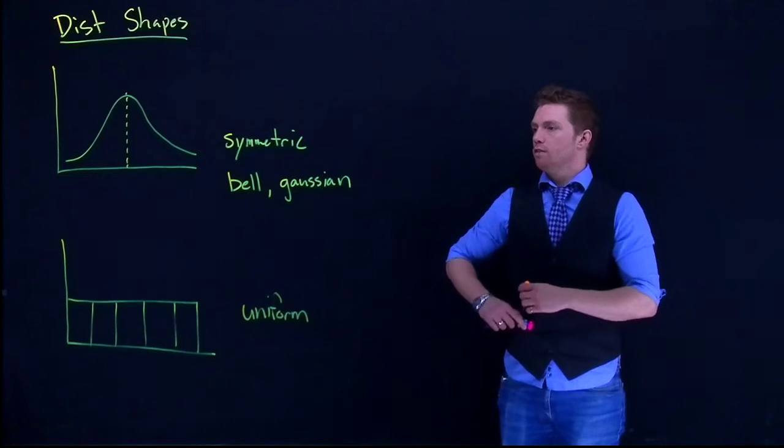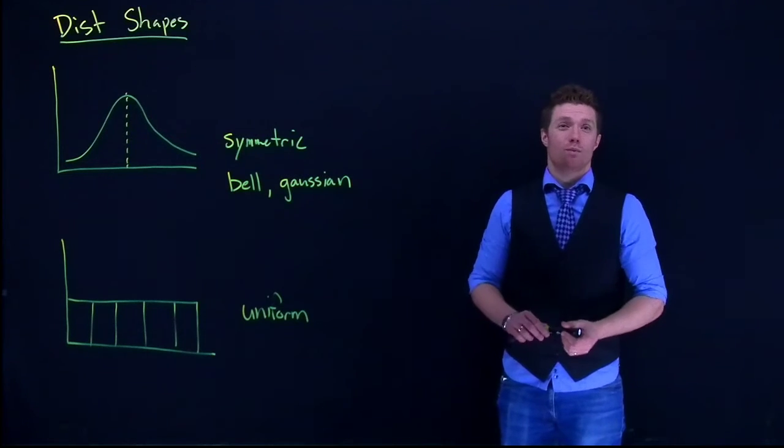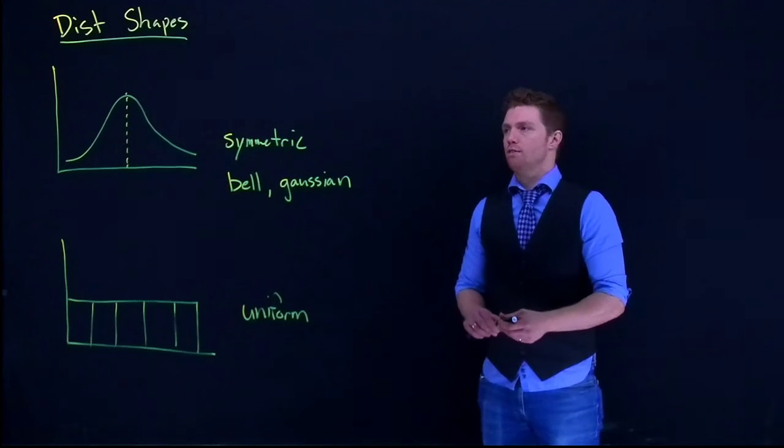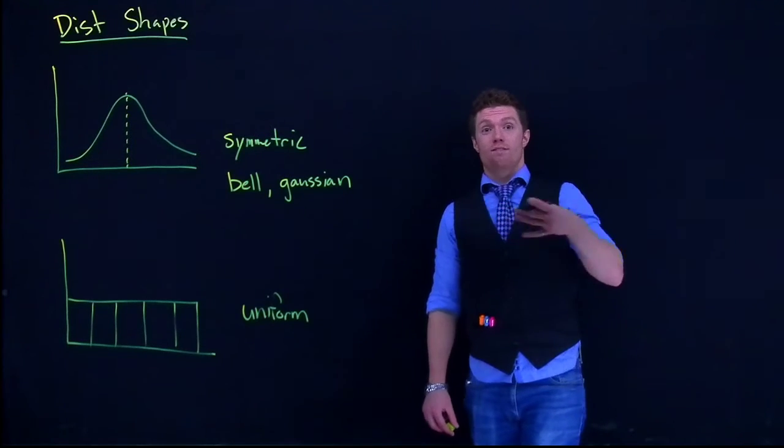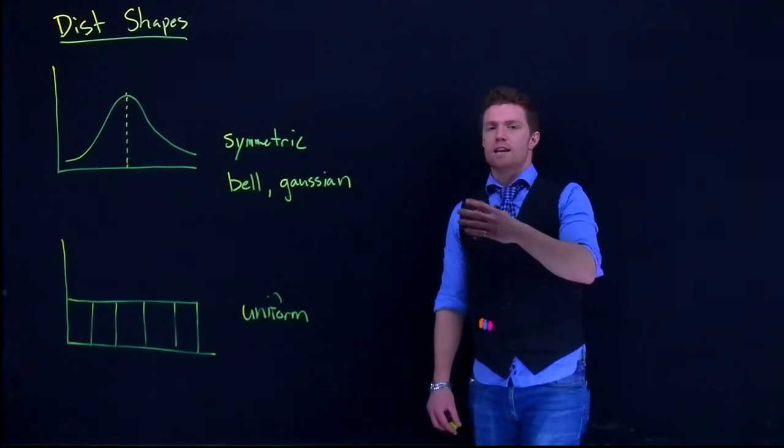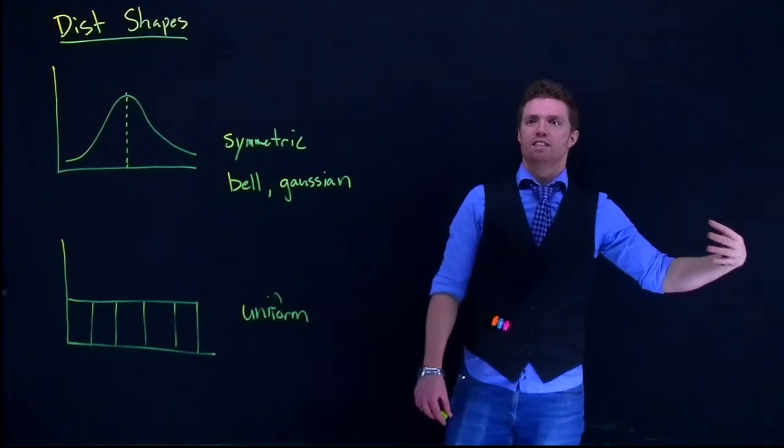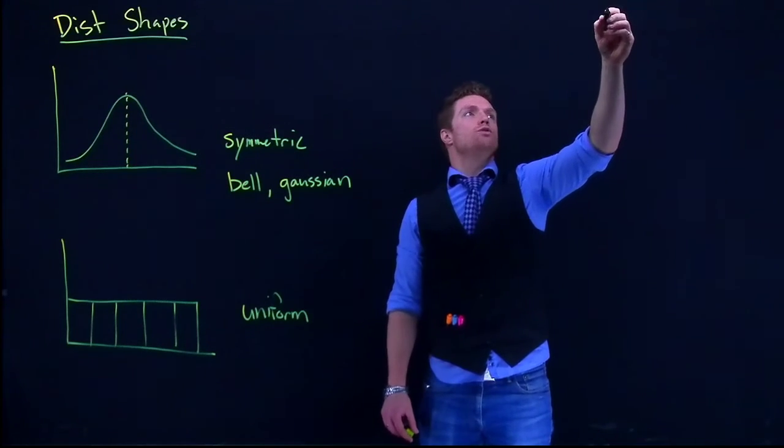Now from our bell curve, what sometimes happens is we can get what's called a skew in our curve. When we get a skew, it means that we have an outlier or some data that is pulling out a tail. So there are two skews that we have.